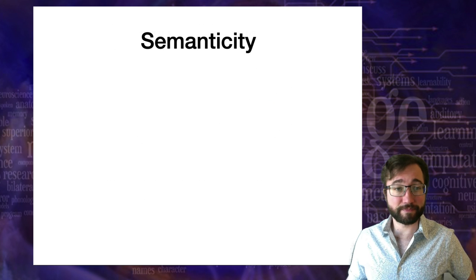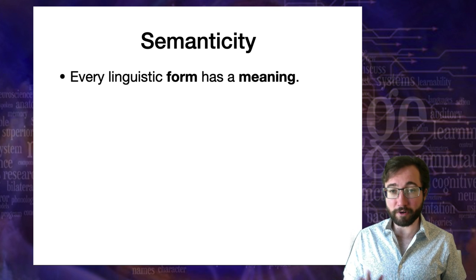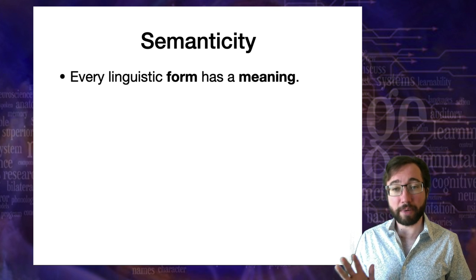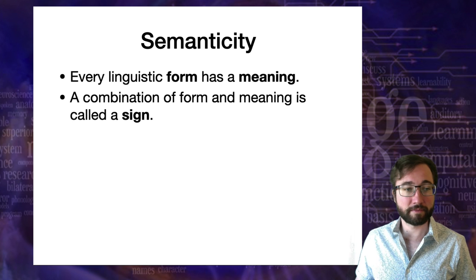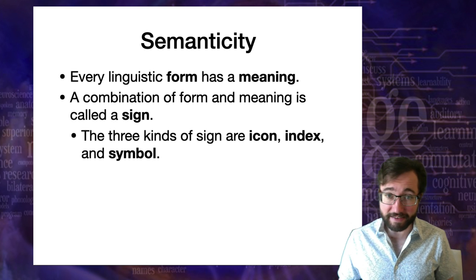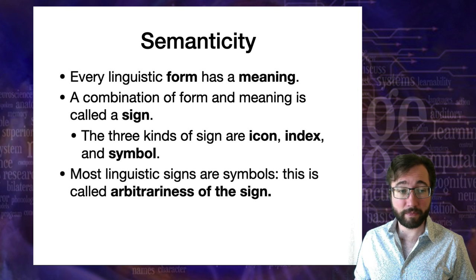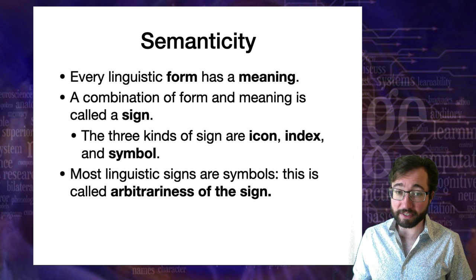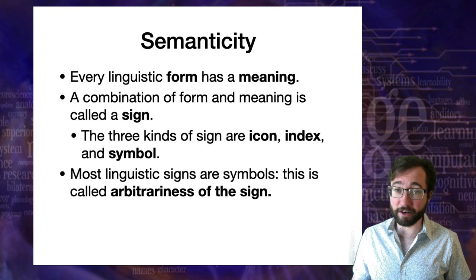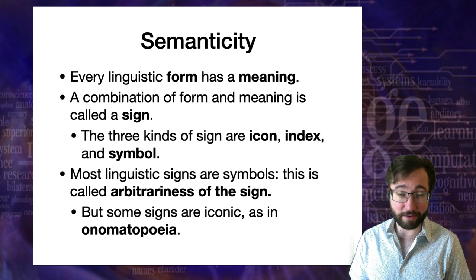To summarize semanticity: every linguistic form has a meaning, language consists of pairs of form and meaning, and a combination of form and meaning is called a sign. The three kinds of sign are the icon, the index, and the symbol. Most linguistic signs are symbols — that's the arbitrariness of the sign — although some are iconic, and we call that onomatopoeia.